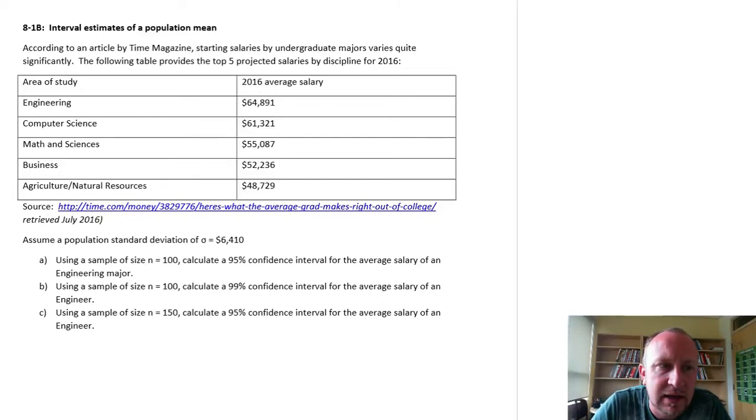Hello and welcome back. In this exercise now we're going to be looking at confidence interval estimates. So here I've got some data taken from a Time Magazine article. I think I've used this data before and I made some fairly strong assumptions with it last time I used it. Here we'll weaken some of those assumptions a little bit. We're looking at average salaries, average starting salaries by college major for a few different disciplines.